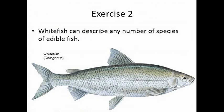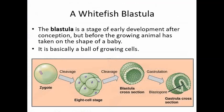Then we can see an animal cell in contrast to the plant cell which was the onion. Whitefish can describe any number of species of edible fish. This one is the Coregonus whitefish. Within the whitefish when they reproduce we have a blastula. The blastula is a stage of early development after conception but before the growing animal has taken on the shape of a baby or a growing whitefish. It is basically a ball of growing cells. We can see the blastula as part of the early development of a whitefish in this diagram.